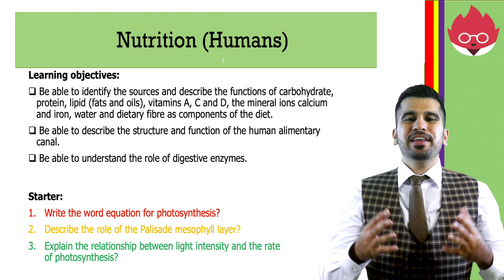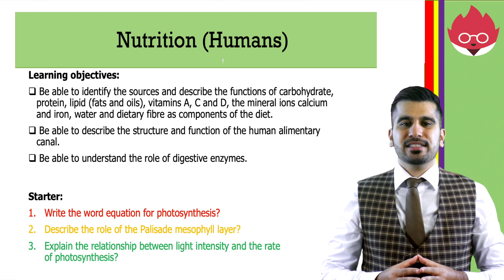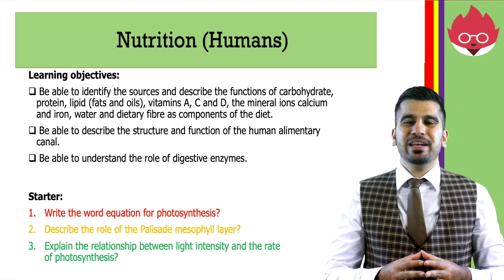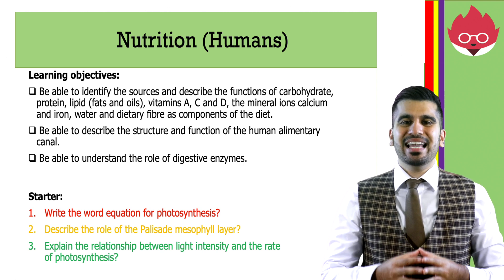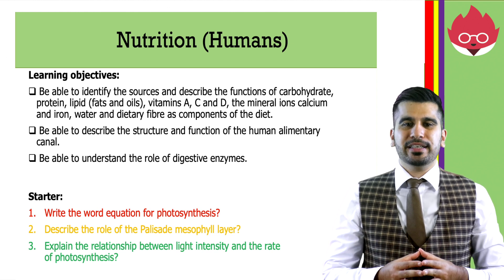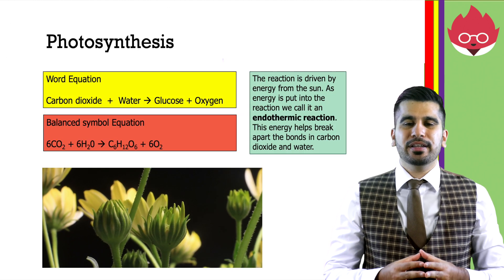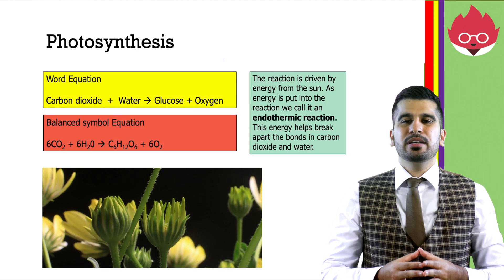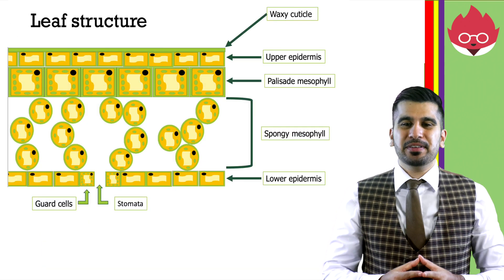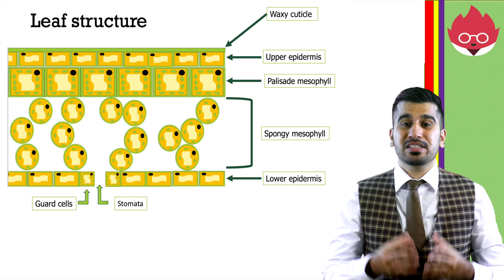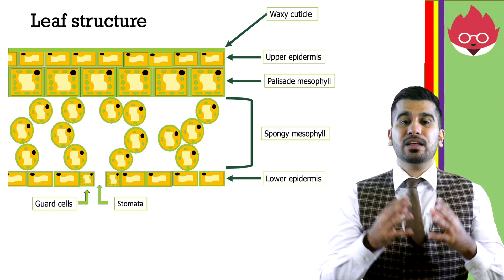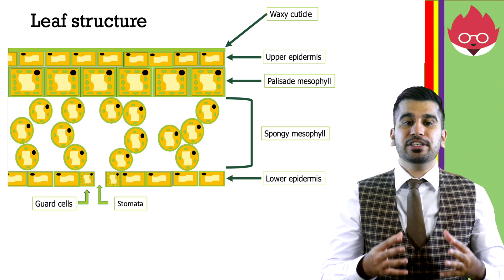As a starter, write the word equation for photosynthesis, describe the role of the palisade mesophyll layer, and explain the relationship between light intensity and the rate of photosynthesis. You can pause the video while you think. For question one, carbon dioxide plus water goes to glucose and oxygen. For question two, the palisade mesophyll layer is packed with many chloroplasts to allow photosynthesis to occur. They are arranged closely together so that a lot of light energy can be absorbed.